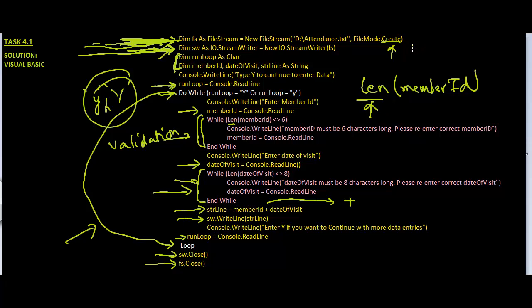One final thing: when we set up our FileStream, we specified the create mode. The operating system will create a new file and we write data into it. If a file already exists with the same name, it is going to be overwritten by whatever values we enter here. So we are opening this file in create mode.